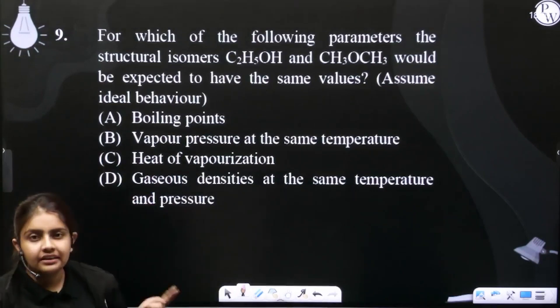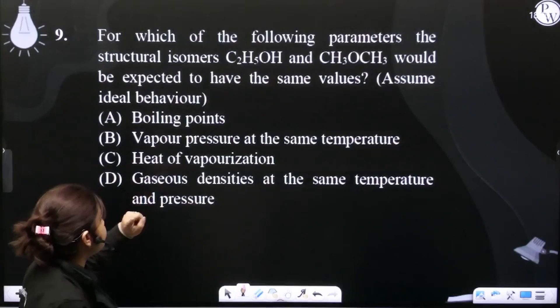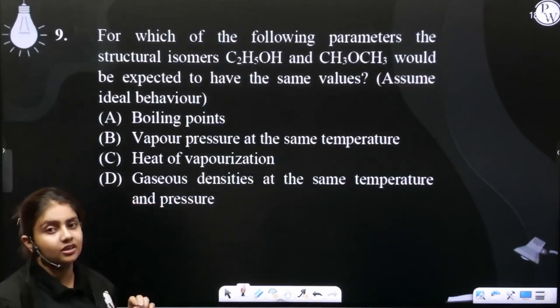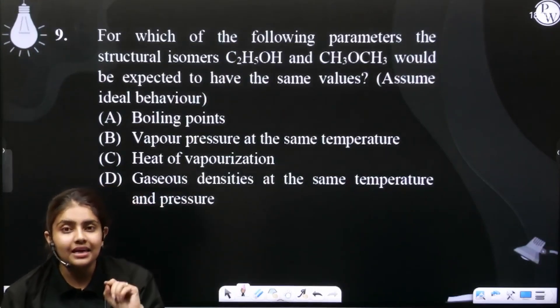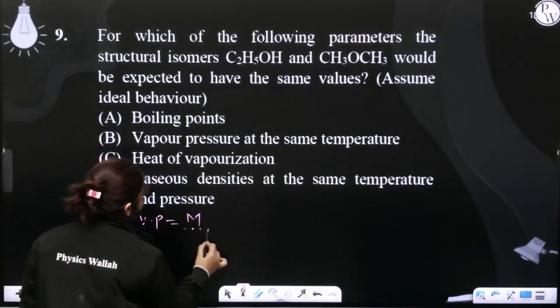Heat of vaporization is also different. Now gaseous density at the same temperature and pressure - isomers, so what is the molecular mass? Same. And gaseous density or vapor density is molecular weight divided by two.